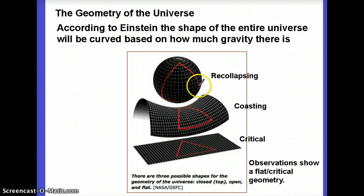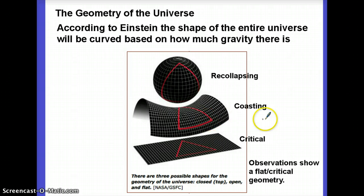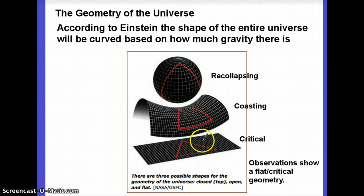If the universe had been a sphere, we would have been in a re-collapsing universe. In a coasting universe, it would be sort of a saddle shape. But that's not what we got — we got flat geometry, and that is the case only for a critical universe where the density is equal to the critical density.